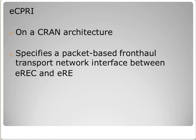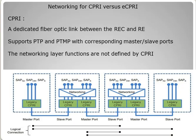So we have EREC and ERE. Let's compare them. The eye-catching part is in the networking. In CPRI, we have a dedicated fiber optic link between REC and RE — look, we have the dedicated one. It supports point-to-point and point-to-multipoint, meaning between one REC and one RE, or one REC and multiple REs with corresponding master-slave ports. Networking layer functions are not defined by CPRI, and therefore supported technologies, redundancy, quality of service, and security all depend on the REC and RE fronthaul implementations.